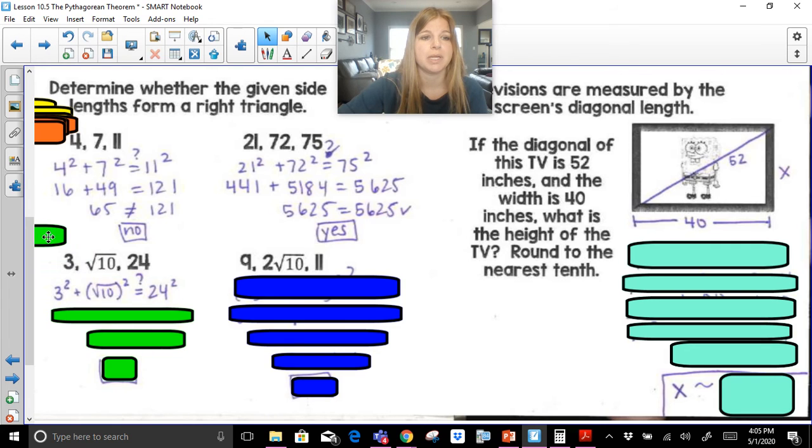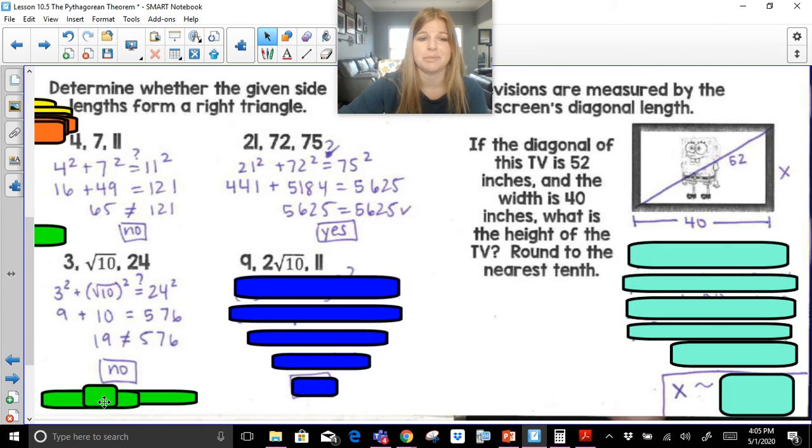If I do 3 squared plus radical 10 squared equals 24 squared, 3 squared is 9, square root of 10 squared is 10. That definitely does not add up to 576.